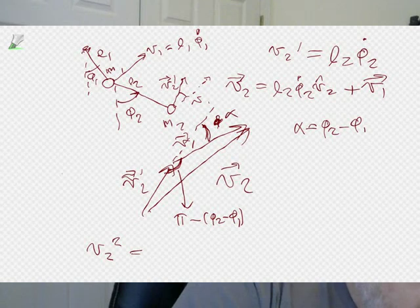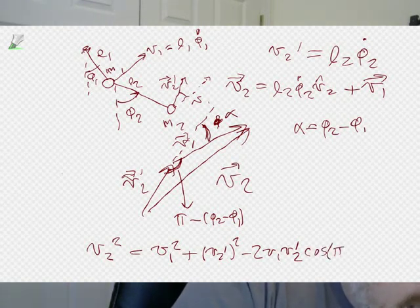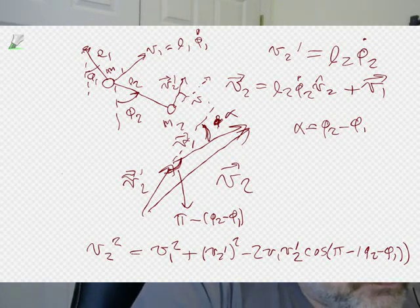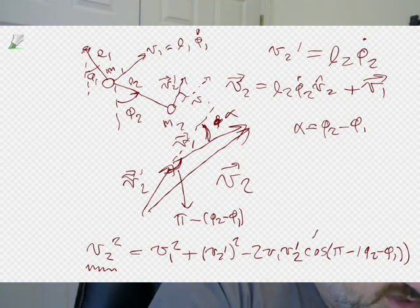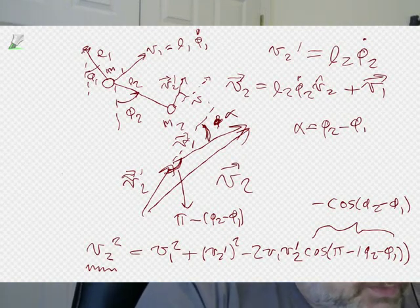We can use the law of cosines to get the magnitude of V2. V2 squared equals V1 squared plus V2-prime squared minus 2*V1*V2-prime*cosine(pi minus phi2 minus phi1). This is the same as plus cosine(phi2 minus phi1), which you can verify with angle addition formulas. Doing the geometry gives us the magnitudes — that's all we need for the Lagrangian kinetic energy.